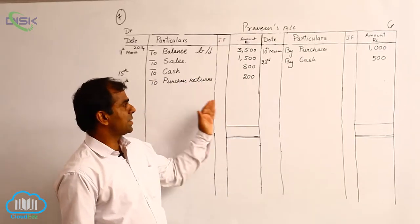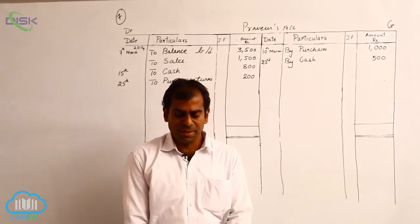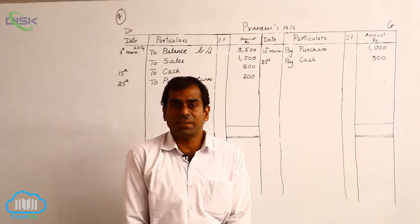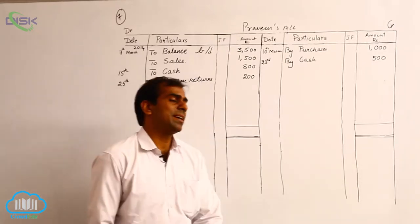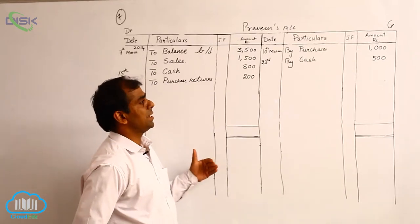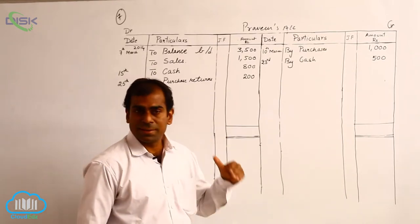Since we have posted all the transactions, let us conclude the problem. It is stated that Praveen's account is settled with 10% discount. So whenever the account is settled, let us see what we should pay or receive from this person.